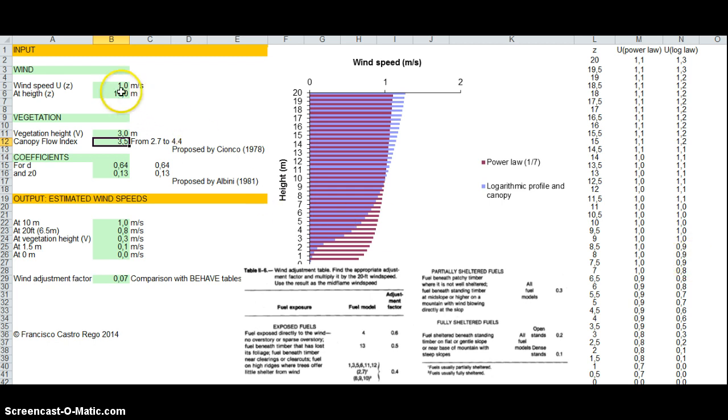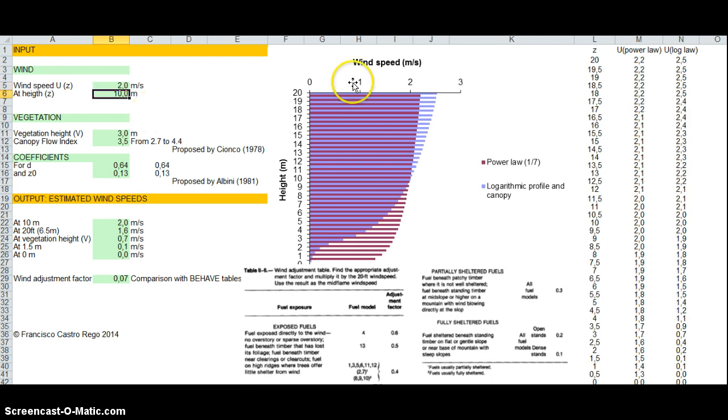Let's change it from 1 meter per second to 2 meters per second. Then this will change, of course. At 10 meters of height, 2 meters per second.